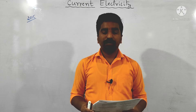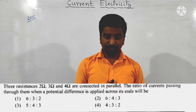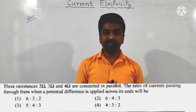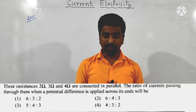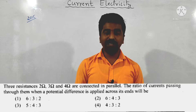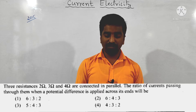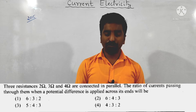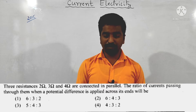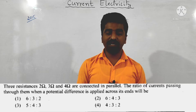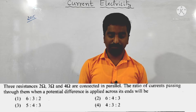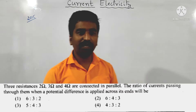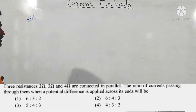Hello dear students. Next question: three resistances 2 ohm, 3 ohm and 4 ohm are connected in parallel. The ratio of current passing through them when a potential difference is applied across its ends will be what? What is the ratio of currents?